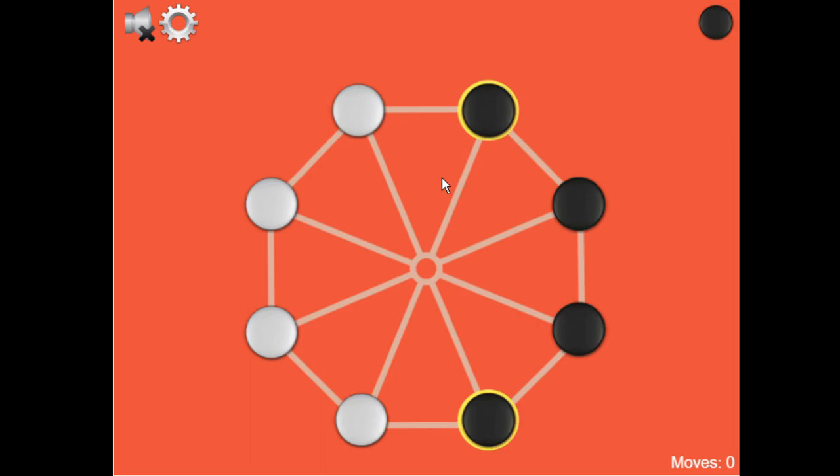Players alternate turns to move one piece to either the center point, or from one corner point to another corner point. A piece can only be moved to the center point if one or both adjacent points are occupied by an opponent's piece. The objective is to get as many pieces as you can to the center point.